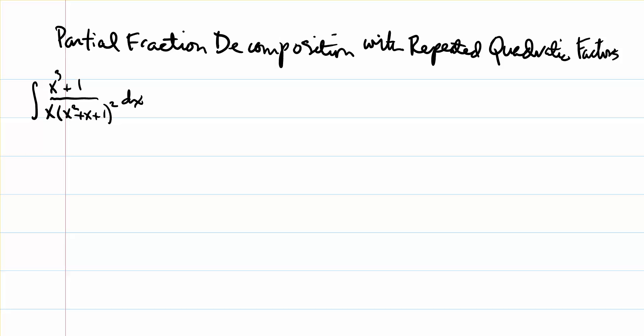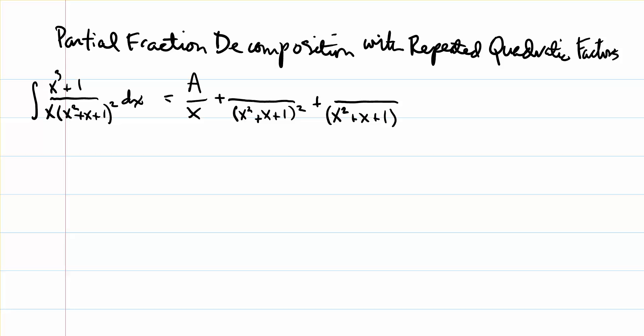For a distinct linear factor we only need one letter over that factor, so for the factor of x we have A over x. But for the repeated quadratic factor, because the degree is 2 or it's a second power, we're going to need two different partial fractions for that factor — one for each degree of the exponent. Since we start at exponent 2, we'll have one for the second power and one for the first power.